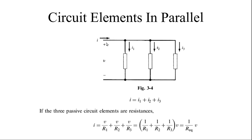But the current passing through each and every element is different, so the current is dividing. I is coming through the node, then it is dividing as I1, then it is dividing as I2, then I3. So element one carries current I1, element two carries I2, and element three carries I3. The current passing through each and every element is I1, I2, I3.